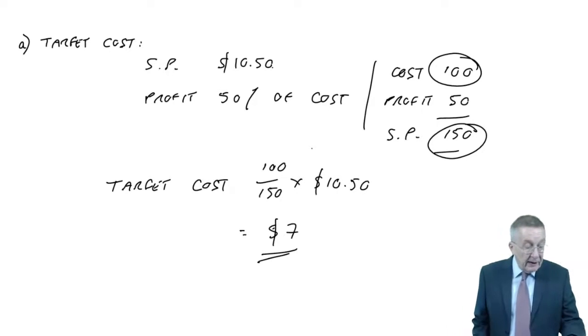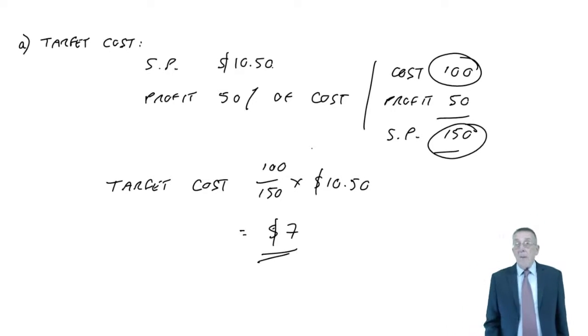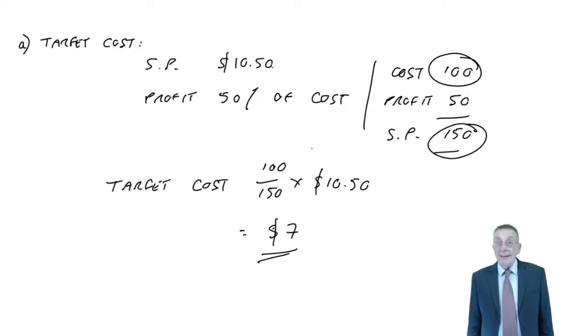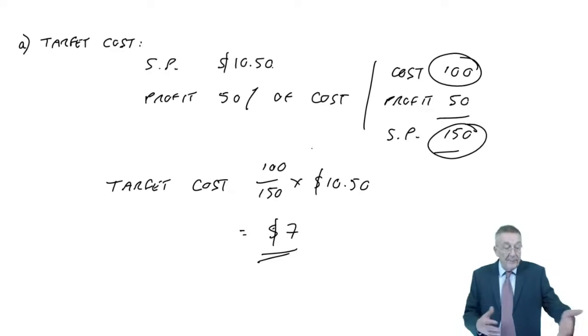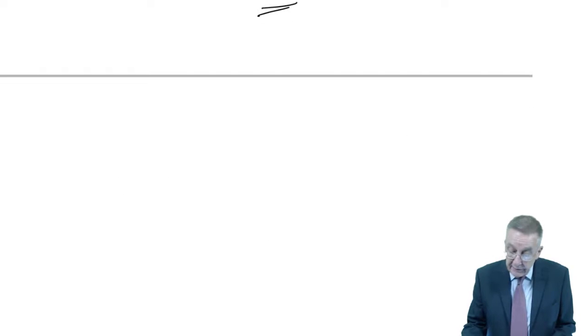That in itself has absolutely nothing to do with life cycle costing - pure target costing. But it does mean for this product to be worthwhile producing, we'd have to make sure that the cost of doing it was $7 or less. It says the manufacturing costs $6, no problem. But if we're going to make a profit overall, we need to take account of all the costs involved, whatever they are - design, development, end of life, anything. We ought to look at all the costs over the entire life.